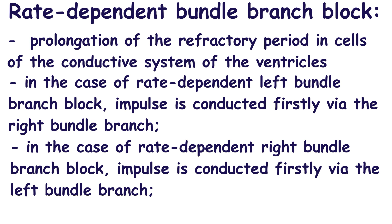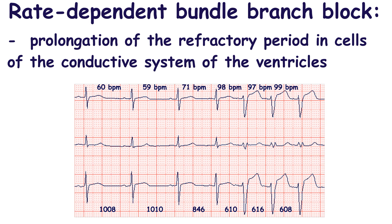The impulse cannot be conducted via the bundle branch if the heart rate exceeds the limit at which conduction is normal. If heart rate is higher, the interval between impulses is shorter, and cells with a prolonged refractory period have not enough time to restore conductability. When the heart rate is lower, cells have time to exit from the refractory period and they conduct the impulse.